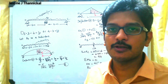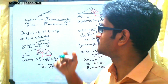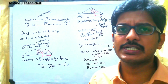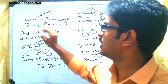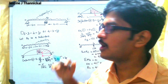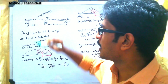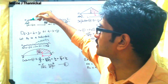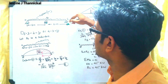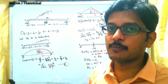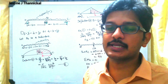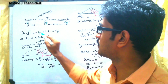Our first aim is to determine the degree of static indeterminacy. Since there is no horizontal load, we can neglect the horizontal equilibrium equation. The number of vertical reactions here is 3 — one at each support — and the number of equilibrium equations after neglecting horizontal is 2. So 3 minus 2 equals 1.